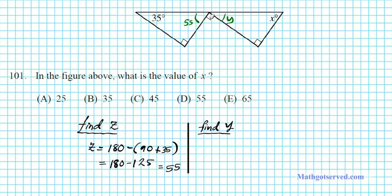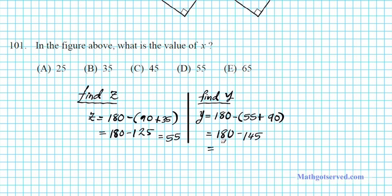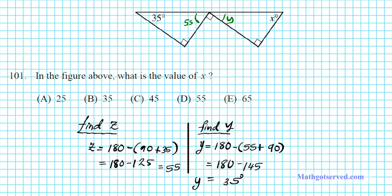Since 55, 90, and y all add up to 180, y is simply 180 minus the sum of the other two. So y equals 180 minus 55 plus 90. 55 plus 90 is 145, so 180 minus 145 gives us 35 degrees. So angle y is 35 degrees.